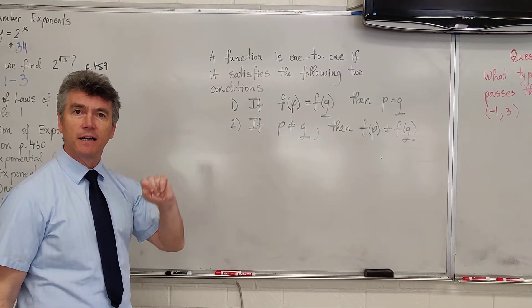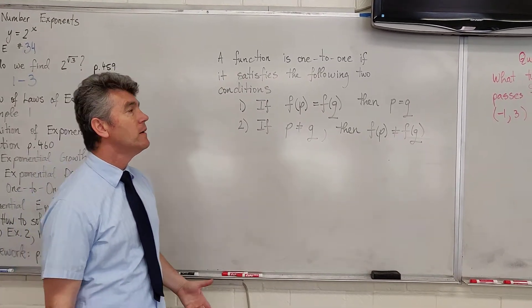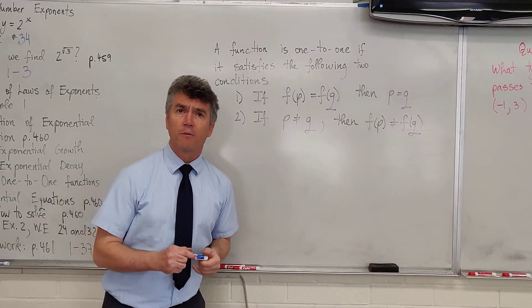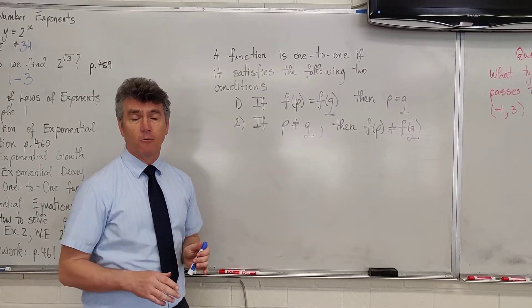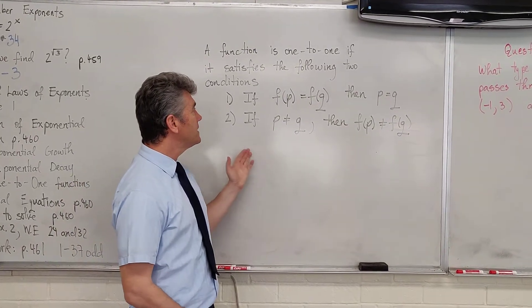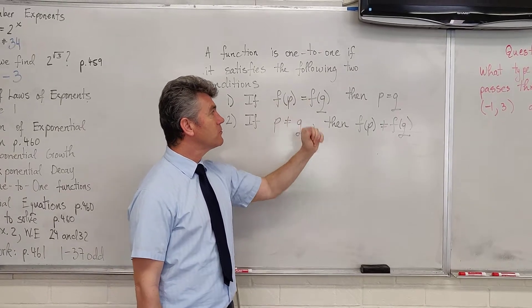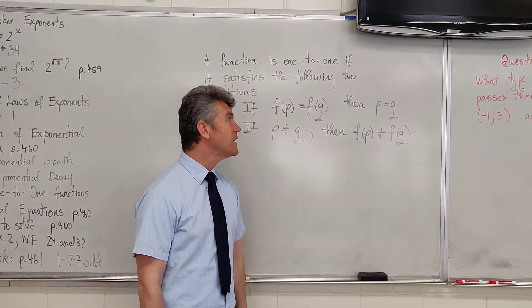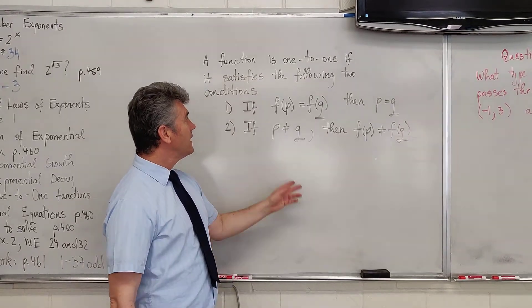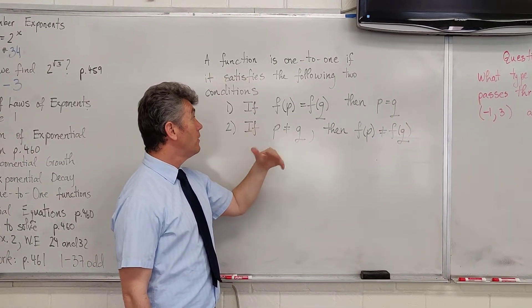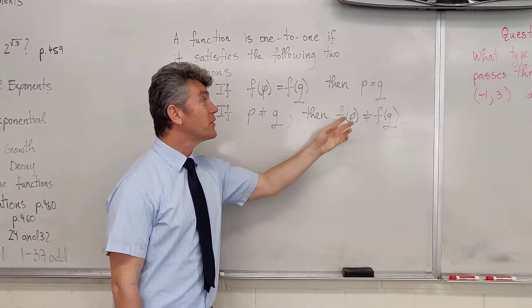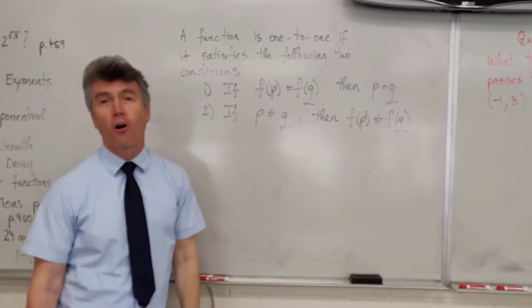Here is the definition of a function that is one-to-one. It is different than the one you find in your book. A function is one-to-one if it satisfies two conditions. The first one is: if f of p equals f of q, then p and q must be equal to each other. What does this mean? It means if the y-coordinates of two points are equal to each other, then their x-coordinates are equal.